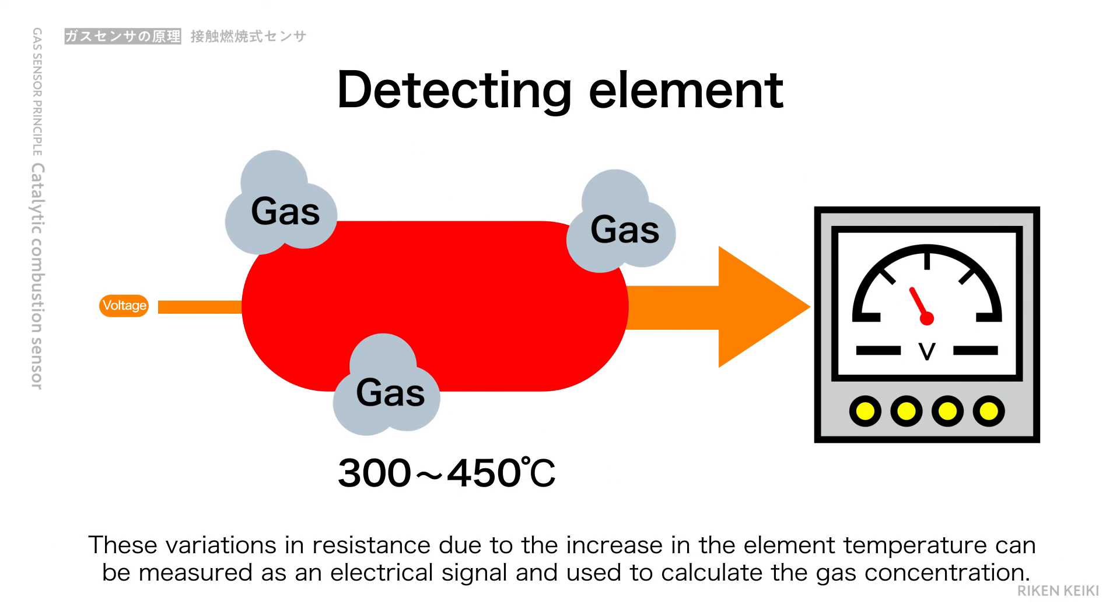This variation in resistance due to the increase in the element temperature can be measured as an electrical signal and used to calculate the gas concentration.